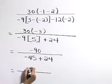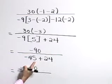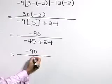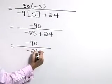Lastly, let's combine those terms in the denominator. Negative 45 plus 24 is a negative 21.